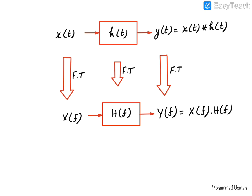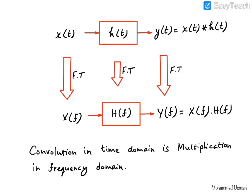An important observation here is a key property of the Fourier transform: convolution in the time domain becomes multiplication in the frequency domain. Both the impulse response and frequency response completely characterize the system — if we know one we can compute the other — and that is why we say the impulse response and hence the frequency response completely describes the system.